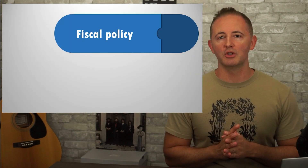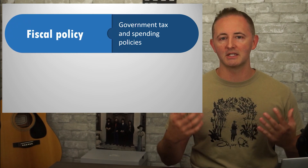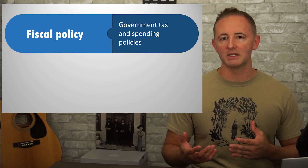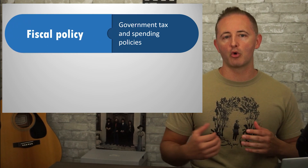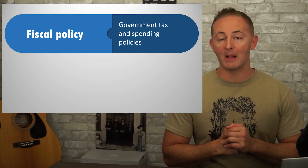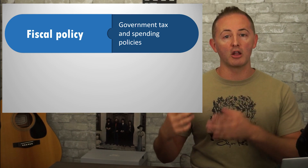There was a lot in Video 3.8. This one will be a quickie. The topic is automatic stabilizers, but we're still talking about fiscal policy, which, as you'll recall, is government tax and spending policies. There are actually two categories of fiscal policy: discretionary and automatic.